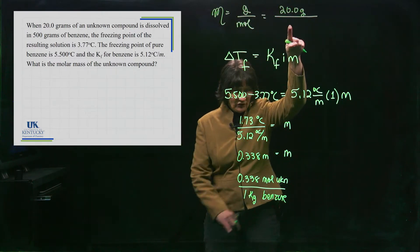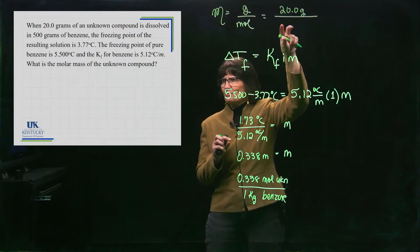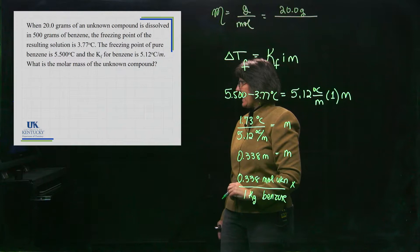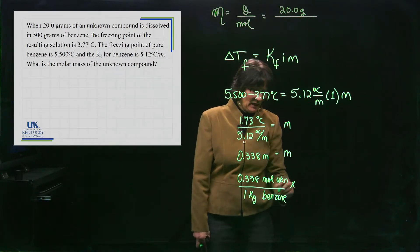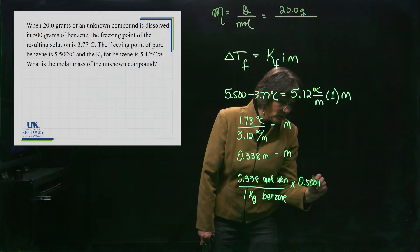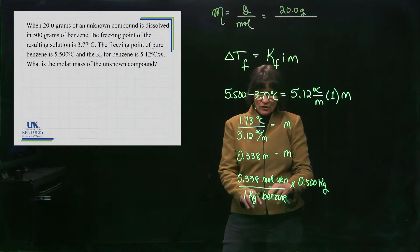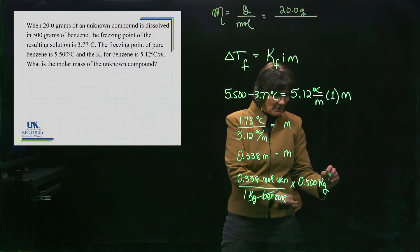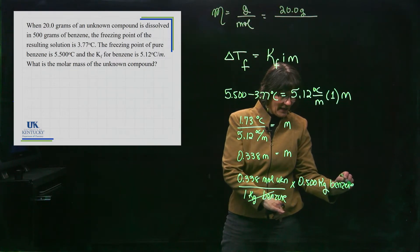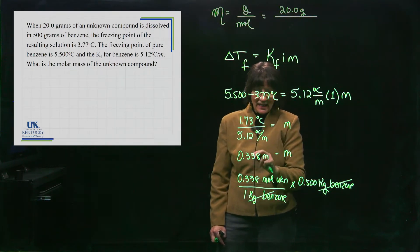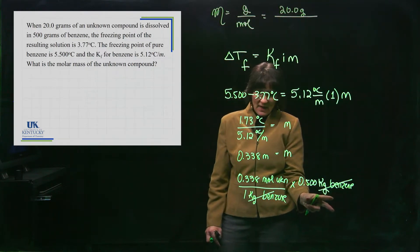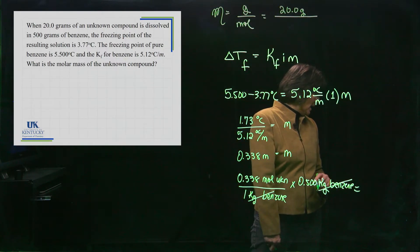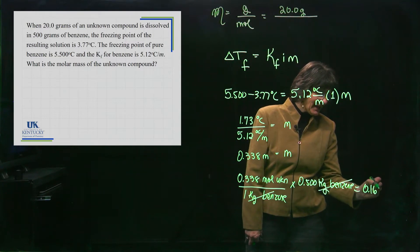Now, that's not moles. This is moles per kilogram. I need just moles to put in here. So what I can do is multiply by how many kilograms of benzene I have. It says I have 500 grams of benzene. That's 0.5 kilograms. I'm not going to do anything else because if I take the kilograms of benzene and the kilograms of benzene, they're going to cancel and what am I left with? So I'm just taking the concentration times the mass of that solvent, and I'm left with moles of just the unknown. And moles of just the unknown is 0.169.